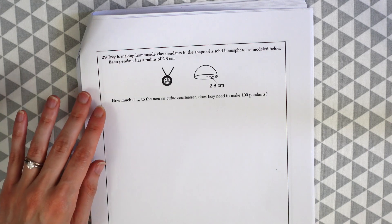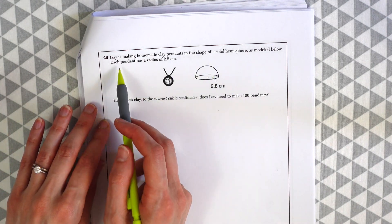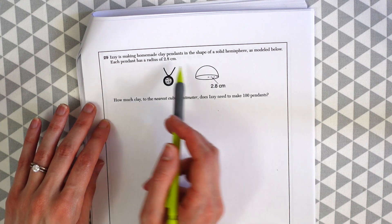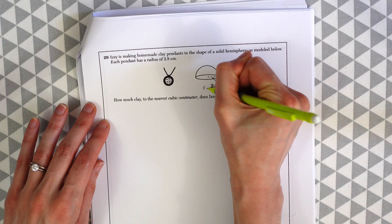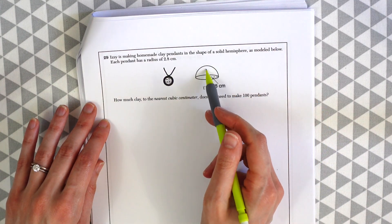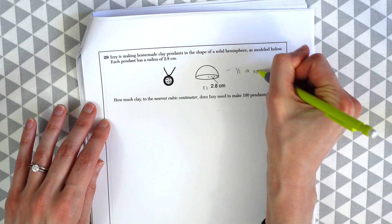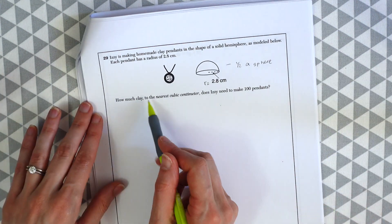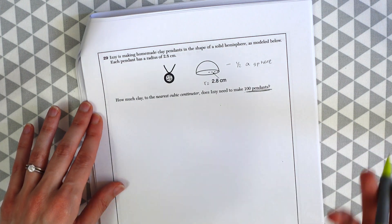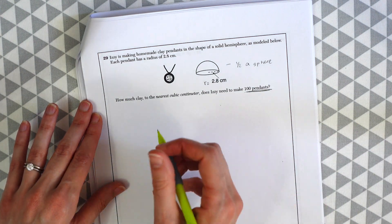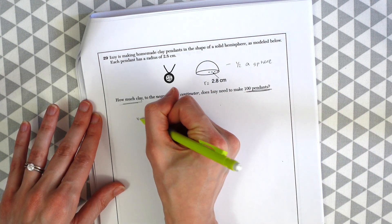Izzy is making homemade clay pendants in the shape of a solid hemisphere. As modeled below, each pendant has a radius of 2.8 centimeters. So this is the radius. And you notice that this is a hemisphere, which is kind of like half a sphere. How much clay to the nearest cubic centimeter does Izzy need to make 100 pendants? So we're gonna be finding, since we want to know how much clay makes up this, that's gonna be volume.